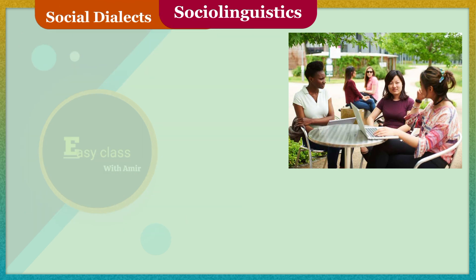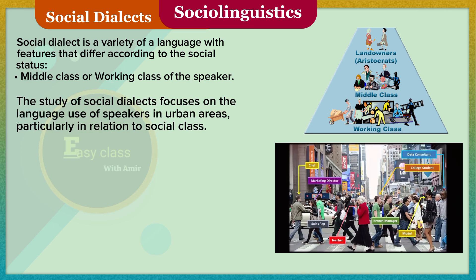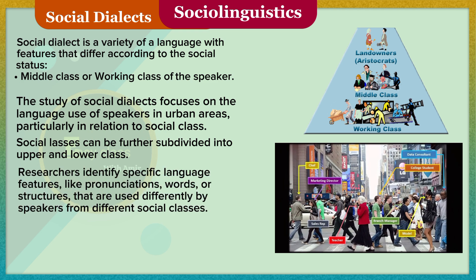A social dialect is a variety of a language with features that differ according to the social status of its speaker, for example middle class or working class. The study of social dialects focuses on the language use of speakers in urban areas, particularly in relation to social class. Social classes can be further subdivided into upper and lower categories. Researchers identify specific language features, like pronunciations, words, or structures, that are used differently by speakers from different social classes.